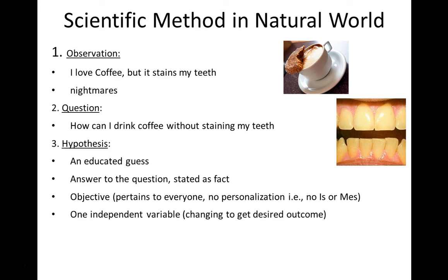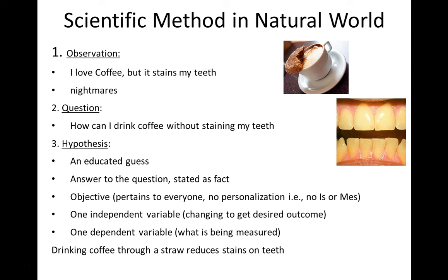There's always going to be one independent variable. The independent variable is something you're changing to get your desired outcome. The dependent variable is what you're going to measure as a result of that change. So my hypothesis, my solution to my problem, is: drinking coffee through a straw reduces stains on teeth. The thing I'm changing — my independent variable — is how I'm drinking coffee. What I'm measuring as a result of that change are the stains on my teeth, which is my dependent variable.